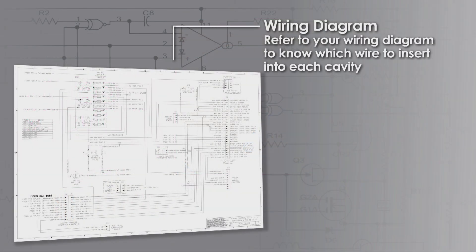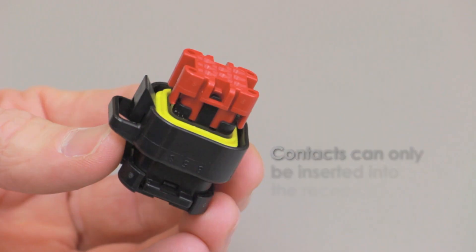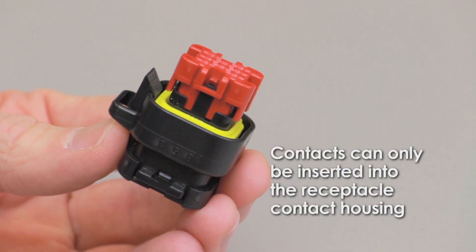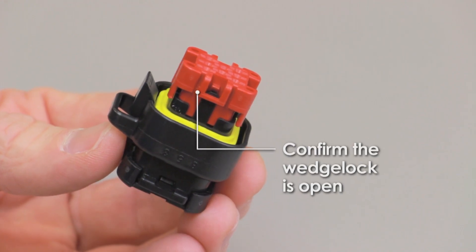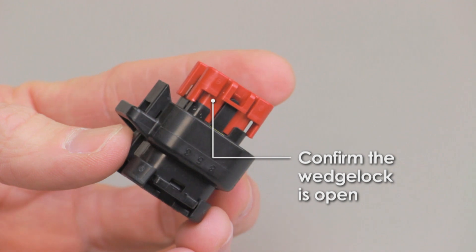Refer to your wiring diagram to know which wire to insert into each cavity. Contacts can only be inserted into the receptacle contact housing. Confirm that the wedge lock on the receptacle contact housing is in the open position.